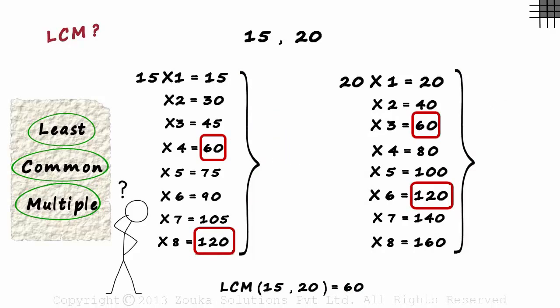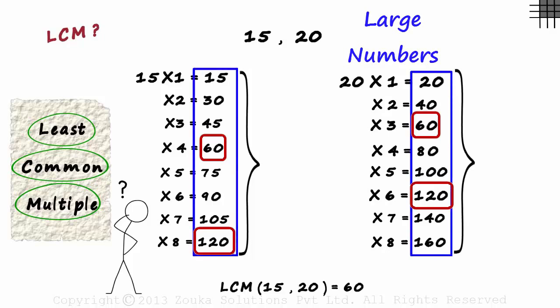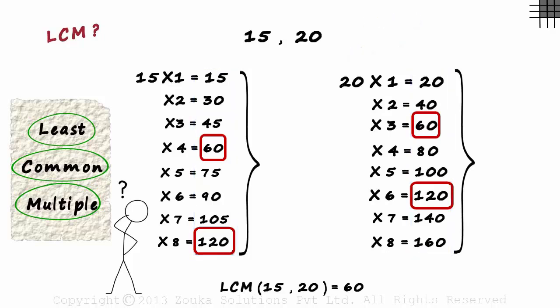No, it isn't. Because when large numbers are involved, it is difficult to find the multiples of each and then find the least common multiple. Next, we will look at different ways in which we can solve for the LCM of numbers.